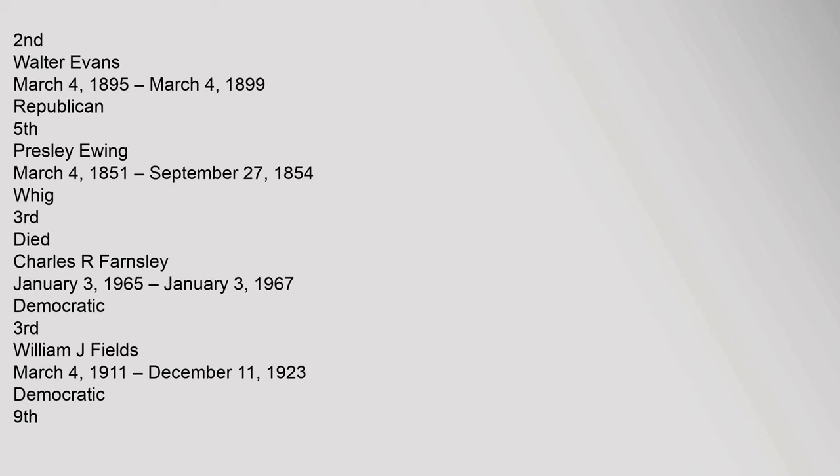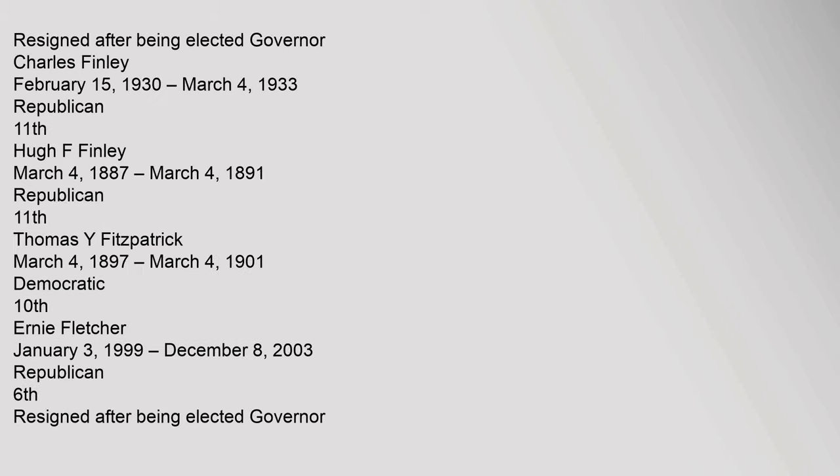Charles R. Farnsley, January 3, 1965 to January 3, 1967, Democratic, 3rd. William J. Fields, March 4, 1911 to December 11, 1923, Democratic, 9th, resigned after being elected Governor. Charles Finley, February 15, 1930 to March 4, 1933, Republican, 11th. Hugh F. Finley, March 4, 1887 to March 4, 1891, Republican, 11th.